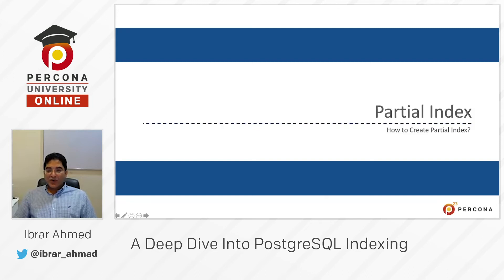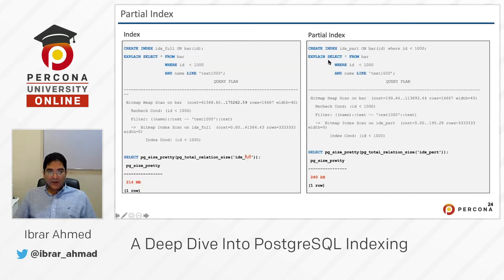So here we have a next topic, which is a partial index in PostgreSQL — how to create a partial index. On the left side, we have an example: create index idx_full on bar column id.